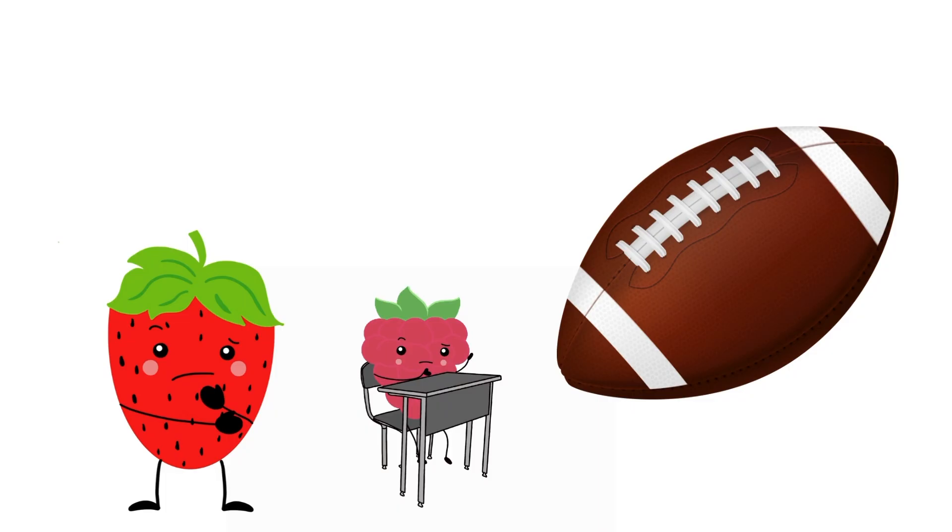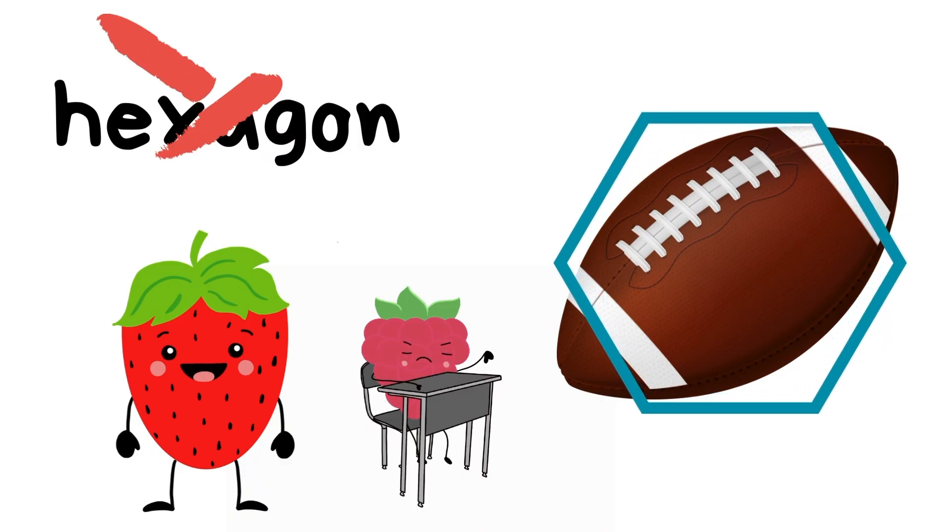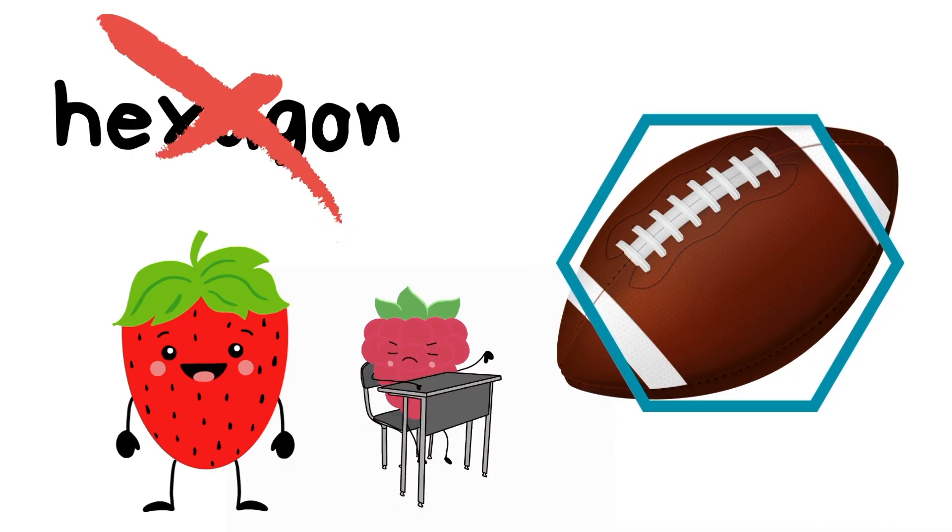What about this shape? Is this a hexagon? How many straight sides does it have? This is not a hexagon. A hexagon has six straight sides and this object does not have six straight sides. So it's not a hexagon.